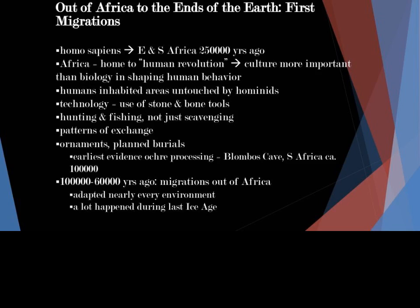Hunting and fishing — not necessarily just scavenging or gathering food — became prominent, along with patterns of exchange. They used ornaments, and it's possible that they developed planned burials. The earliest evidence is in the Blombos Caves of South Africa, circa 100,000 years ago. Between 100,000 to 60,000 years ago was the beginning of migration out of Africa, and these people adapted to nearly every environment on Earth, much of this taking place during the difficulties of the last Ice Age.